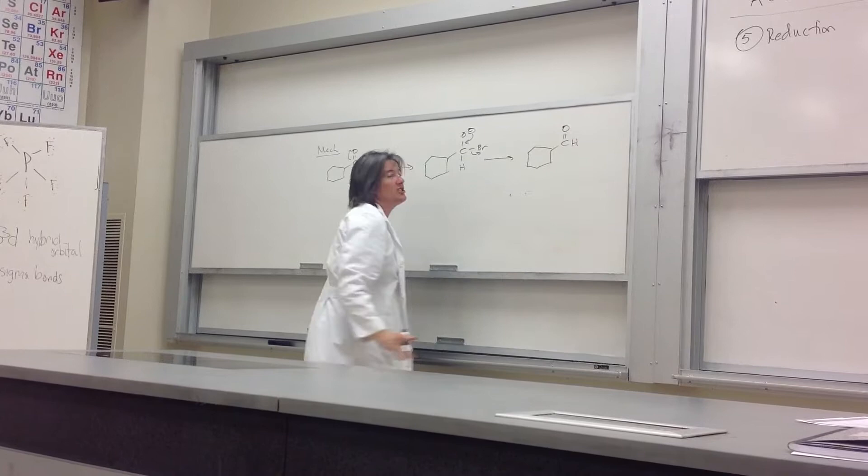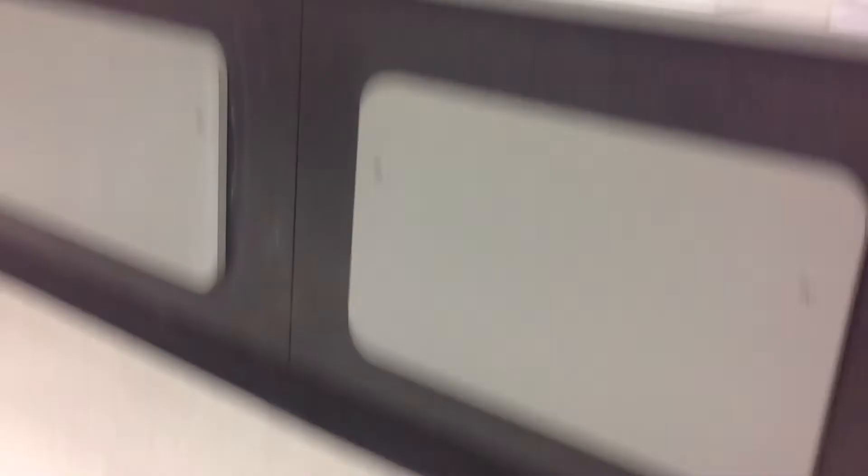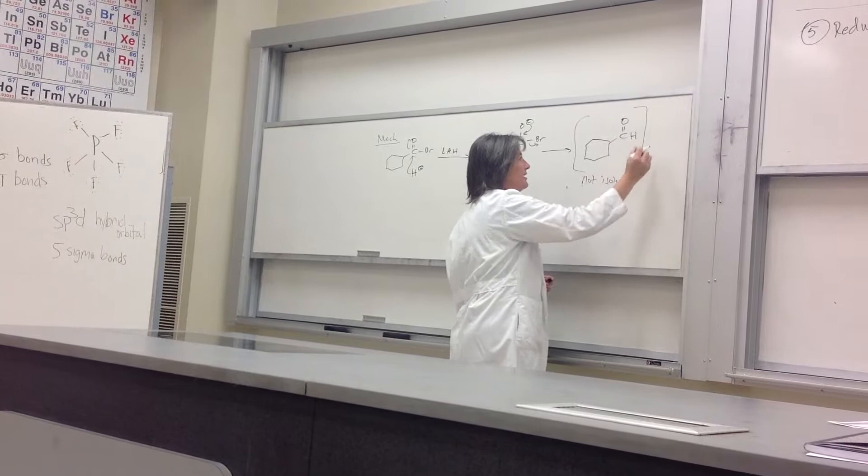Trick question — is that the product? No. Why not? We're still with the aluminum hydride, and LAH produces more hydride. So this intermediate is not actually isolated — put brackets around it. It reacts further because LAH has a lot of hydride on it.